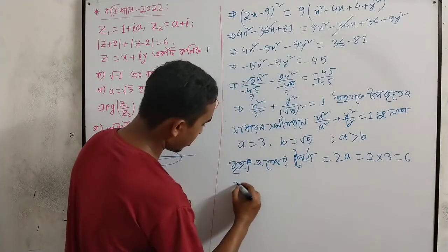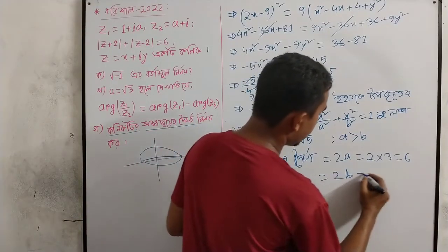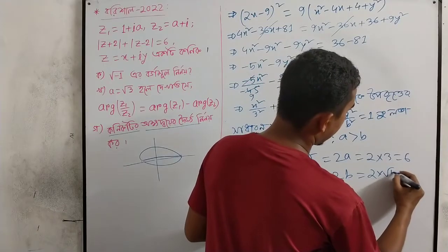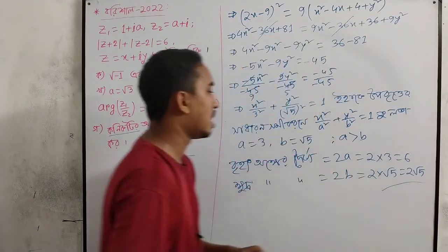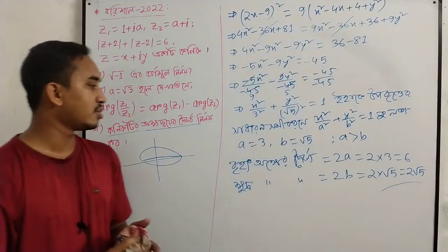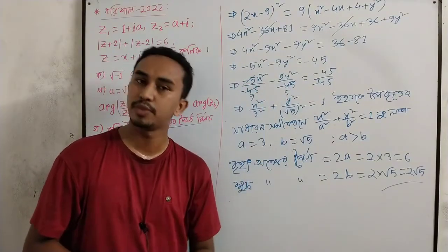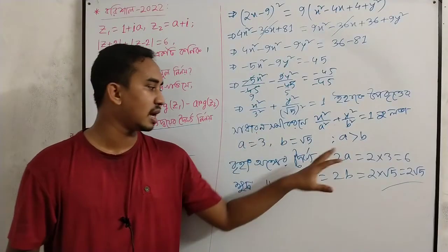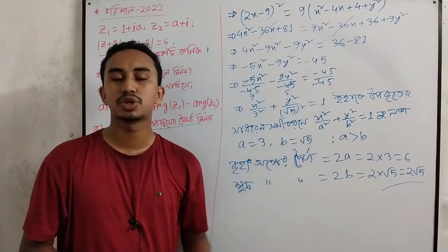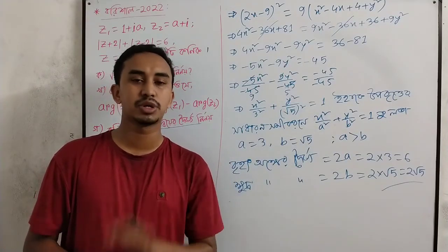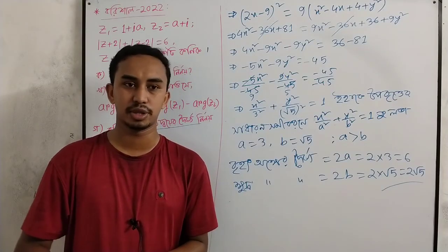3 is 6, and 2b is 2b. 2b is 2b. So this is the answer. 6b is 2b, and 2b is 2b. This is the answer. So this is the answer. If you have any questions, please comment. Thank you.